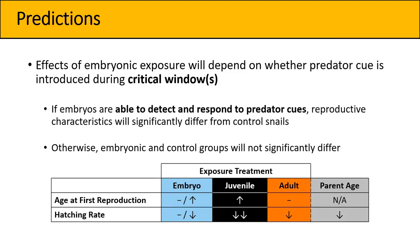This response has been shown in some other snail species, but we didn't know for sure whether our particular species would be capable of responding at all. So I have two separate predictions for the embryo exposure group: if they are not detecting or responding to predator cues, I expect the embryonic exposure and control groups to be the same. For age at first reproduction, previous studies in our lab show that generally early exposure to predator cues delays reproduction, so I expected to see that delay in both the embryo and juvenile treatments.